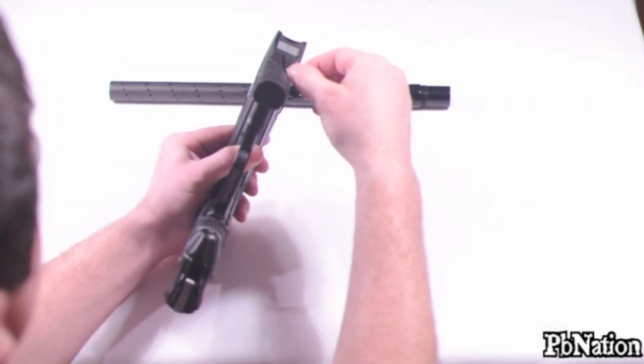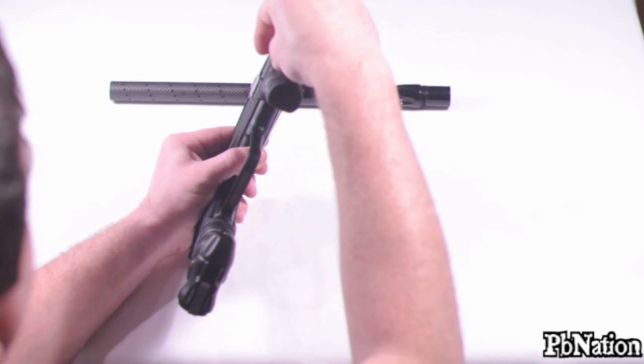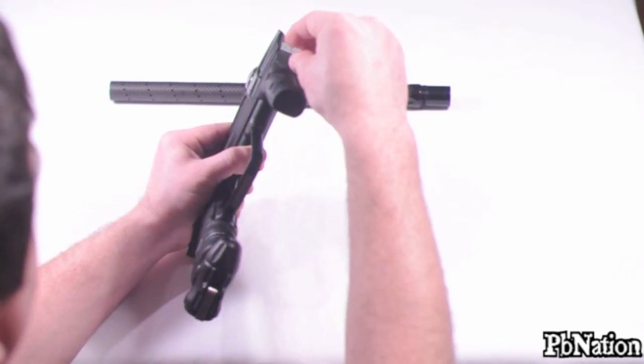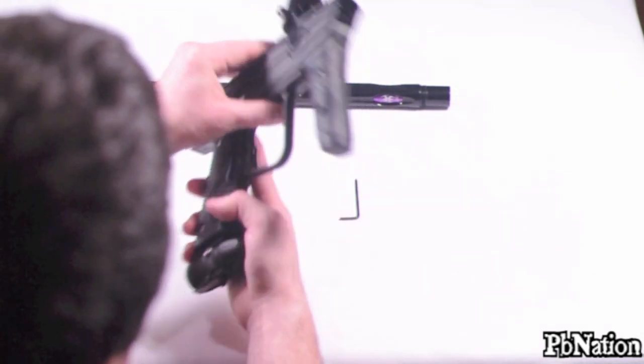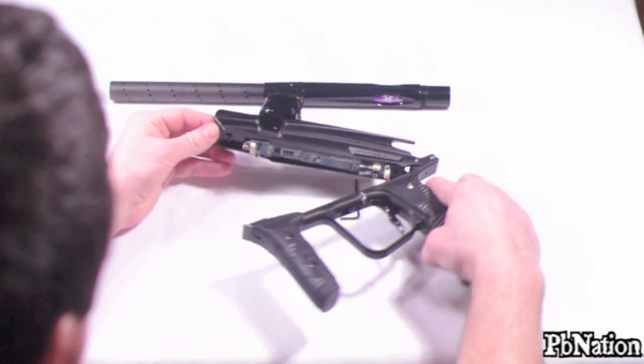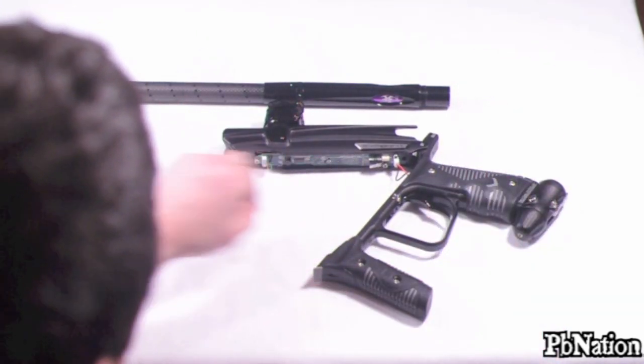I once again have my trusty 3/32nd Allen wrench and I actually loosened this screw up already. This is a screw right in front of the foregrip. Once it's loose, the gun simply opens up. It just splits apart just like that.